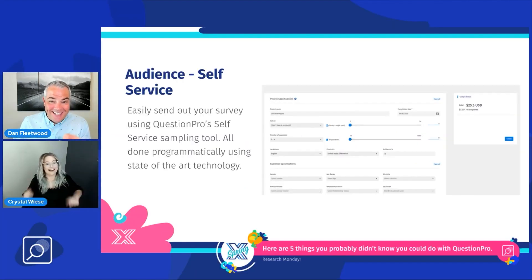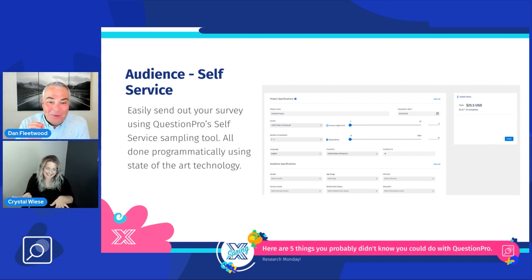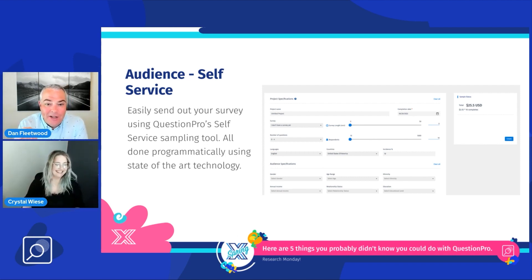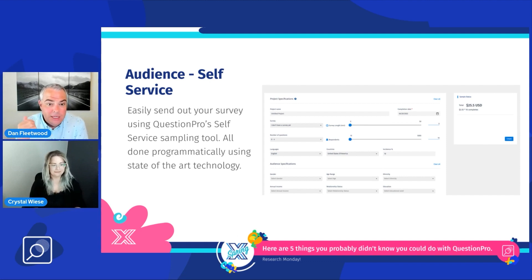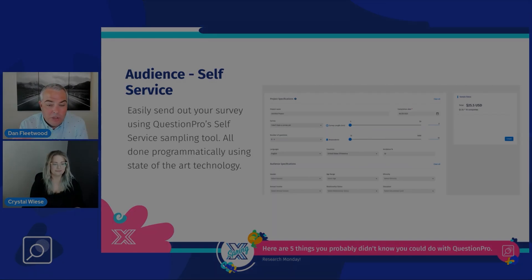The final feature is audience self-service — I love this one. You have your survey, you can send it out, and it's all done programmatically using our technology to not only filter on who your audience is, but also send it out and get the results back. This is all done inside of QuestionPro.